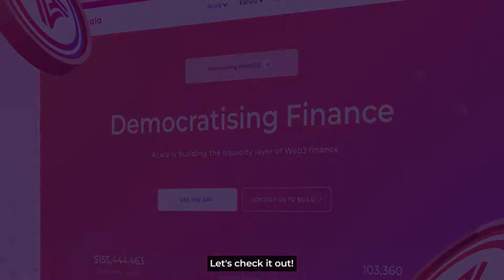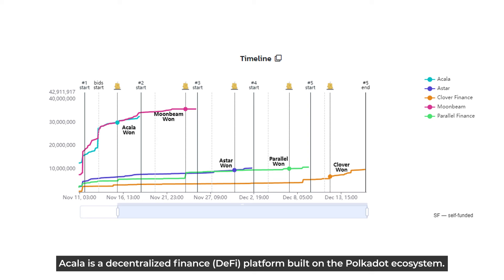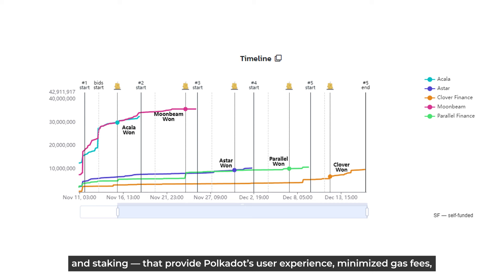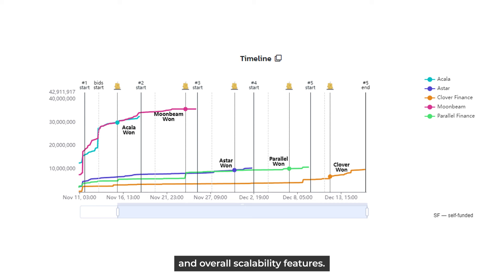Akala is a decentralized finance DeFi platform built on the Polkadot ecosystem. It is designed to be a hub for cross-chain liquidity and DeFi applications. This protocol offers various DeFi products and services, including lending, borrowing, and staking, that provides Polkadot user experience, minimize gas fees, and overall scalability features.